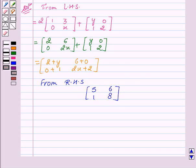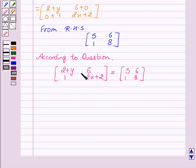Therefore, we can write [2+y, 6; 1, 2x+2] equal to [5, 6; 1, 8].